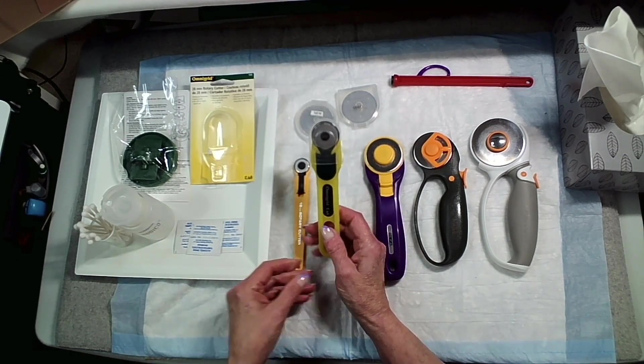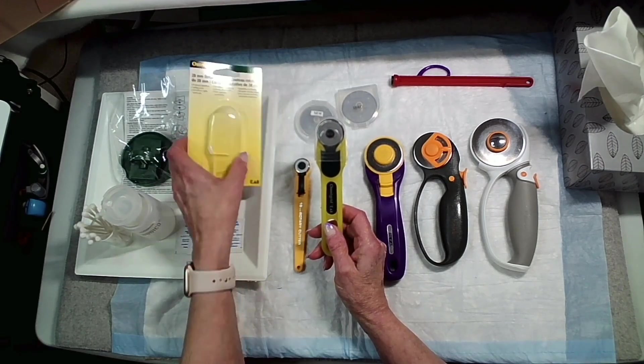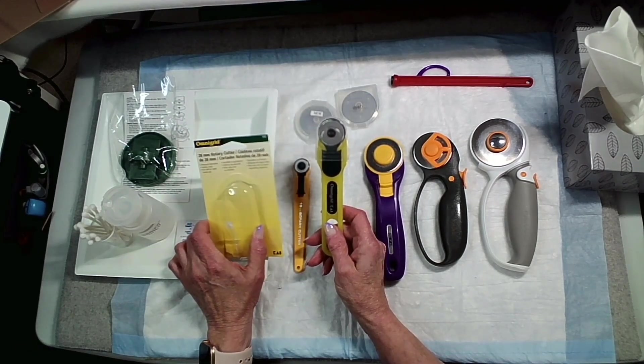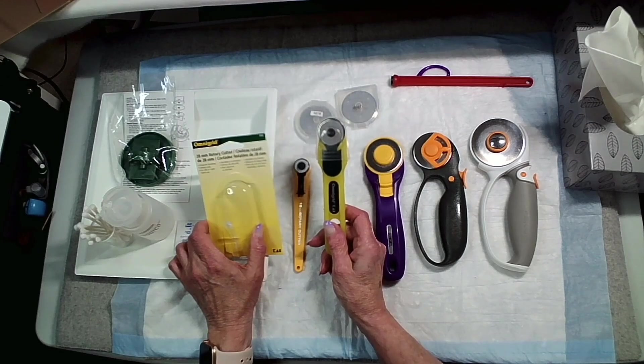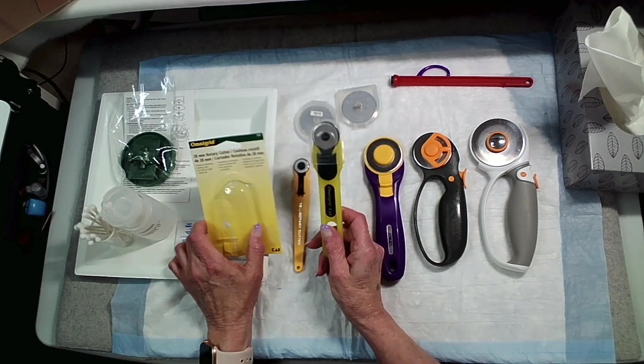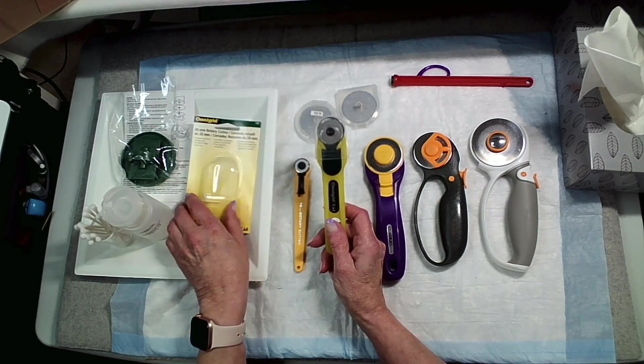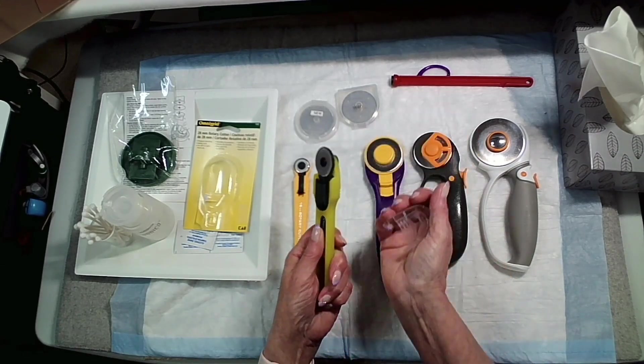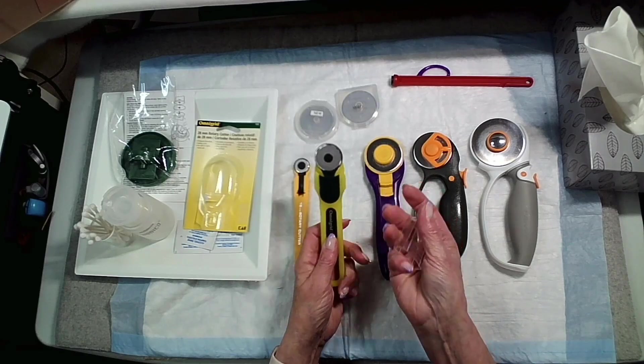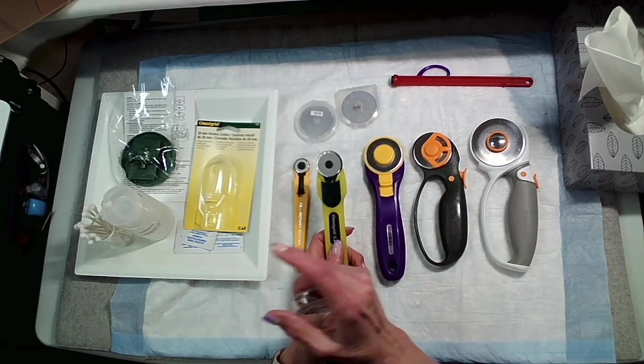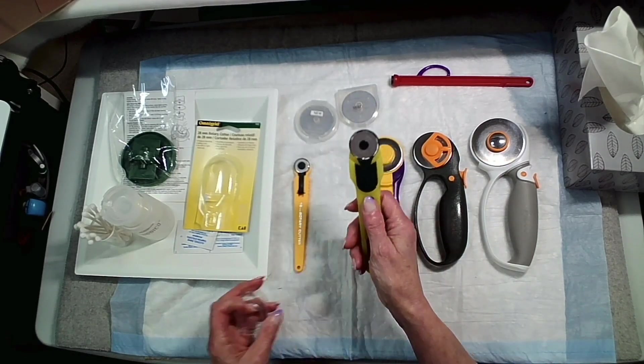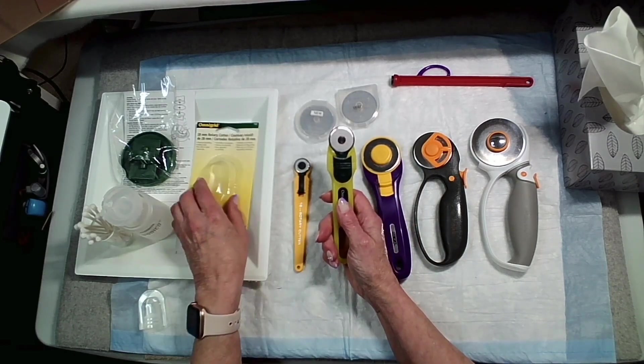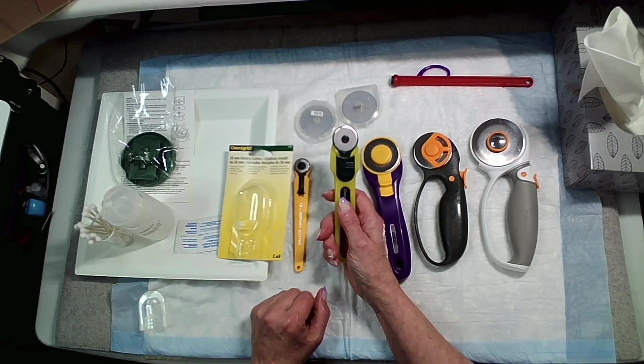It's a 28 millimeter Omnigrid rotary cutter. It has a guard on it that protects it when not in use. I'll have to read some of the directions on here just so I don't miss anything. It is pressure sensitive.